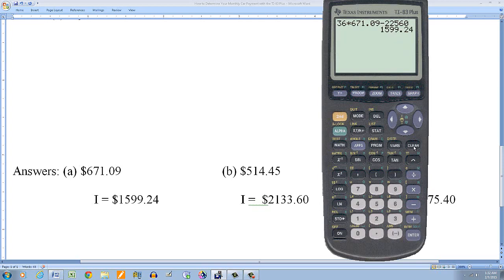Then if we go with four years, that's 48 payments times the amount of the payment, which is 514.45 minus the actual amount that we're financing, which is $22,560. Okay. So I'm paying more interest there.